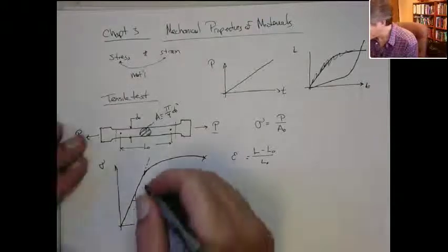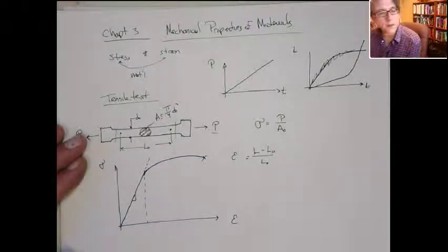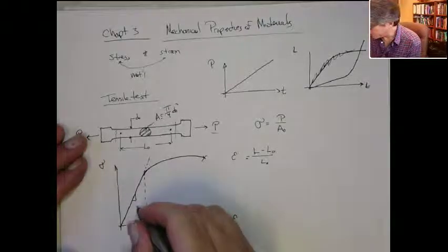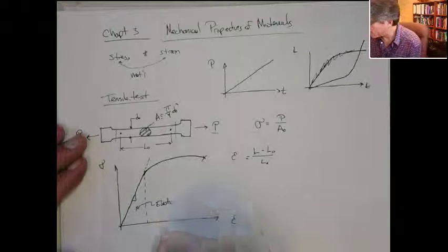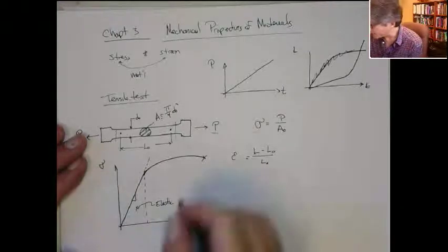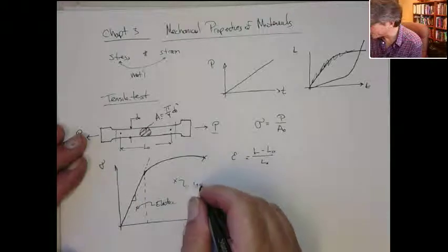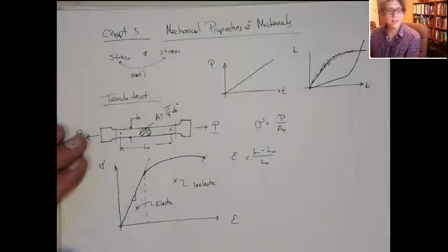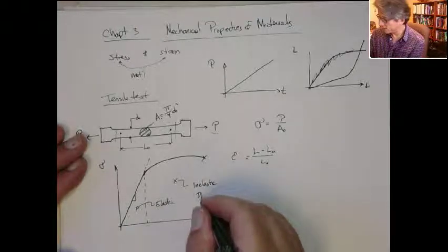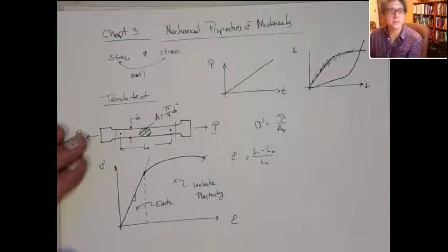This region where you have the linear response, this is the elastic region. That's the elastic response. And this region here is called the inelastic region. And it's typically associated with a mechanism we call plasticity. So that's usually a plastic region.